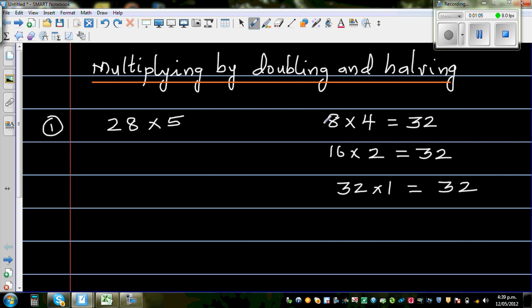8 times 4. So what have I done here? 8 has become 16 and 4 has become 2. How is 16 related to 8? Well you have doubled 8. So 8 if you double you get 16. And how is 2 related to 4? 2 is the half of 4. So when you are multiplying two numbers you can get the same answer by doubling one and halving the other.